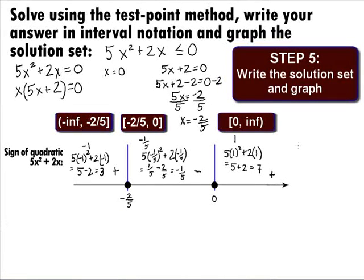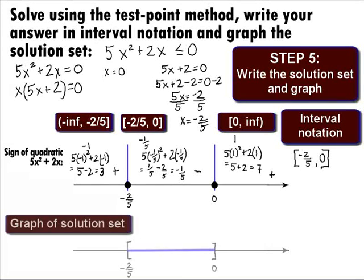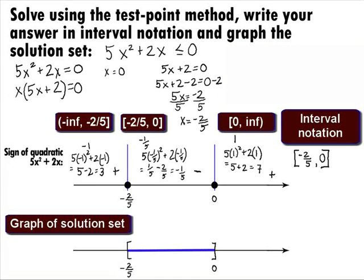In Step 5, we need to write the solution set and graph this. Since we are including where it is equal to 0, this will be a closed interval, and we will use box ends to indicate that. Our final answer in interval notation is the closed interval of negative 2 fifths to 0. The graph will have a box end at negative 2 fifths and a box end at 0 with everything in between shaded. All right. Thank you.